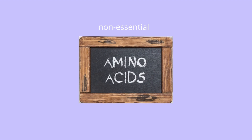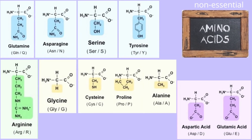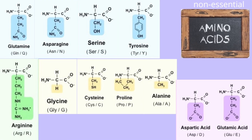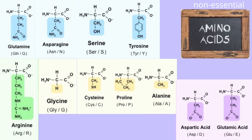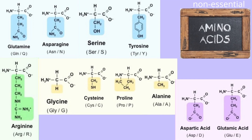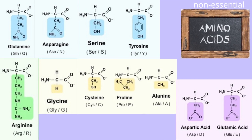Let's next talk about non-essential amino acids. They are glutamine, asparagine, serine, tyrosine, arginine, glycine, cysteine, proline, alanine, glutamic acid, and aspartic acid.